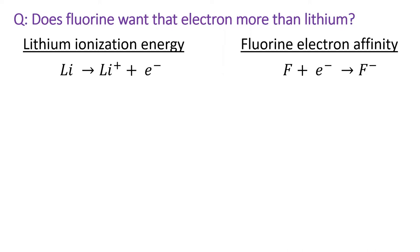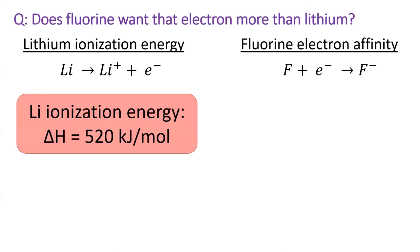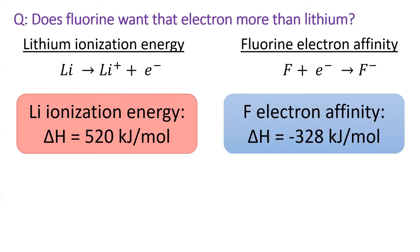But do the numbers add up? Lithium's ionization energy is 520 kilojoules per mole. It is a positive number because removing an electron from a neutral atom is always an endothermic process. This number represents how strongly lithium holds on to its valence electron. Fluorine's electron affinity is negative 328 kilojoules per mole, meaning fluorine will put 328 kilojoules of energy into securing another electron.